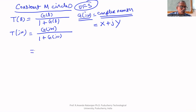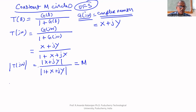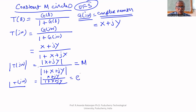Therefore the closed loop transfer function becomes (X + jY) upon (1 + X + jY). The modulus of T(jω) equals the modulus of (X + jY) upon the modulus of (1 + X + jY). Let us call this modulus value as M, and the phase angle as θ, so T(jω) = M·e^(jθ).